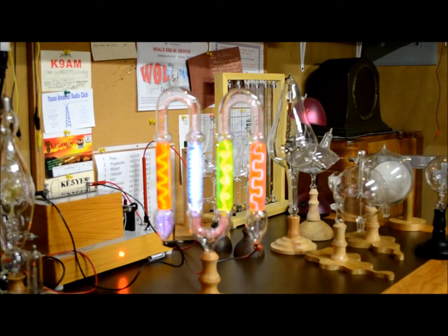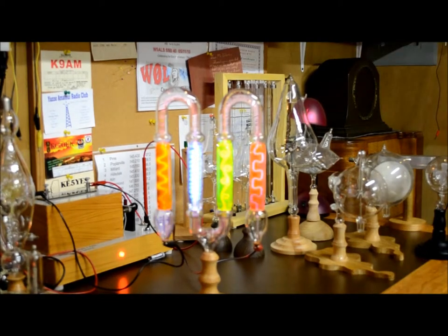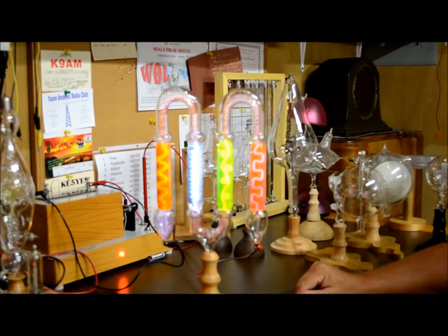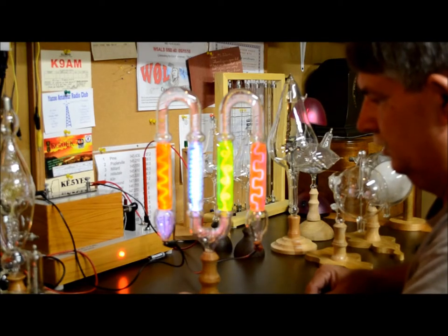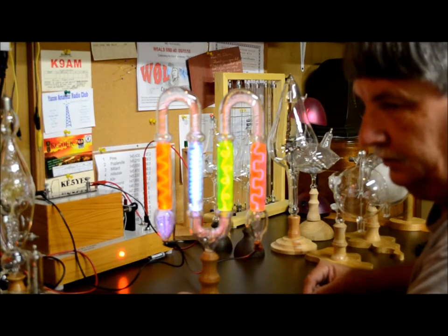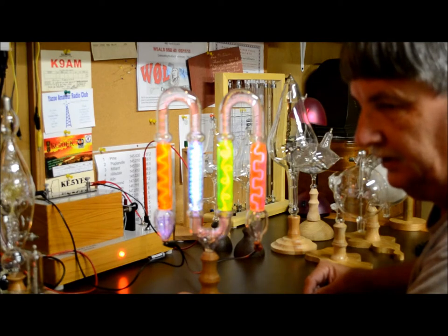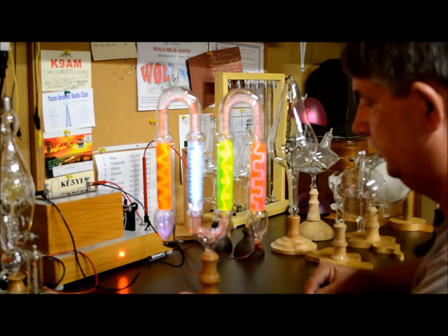Hello everyone. My name is Alton Smith and I'm going to do a presentation demonstration on some of my Crookes tubes here. Crookes tubes were made in England and Germany in the late 1800s, early 1900s.